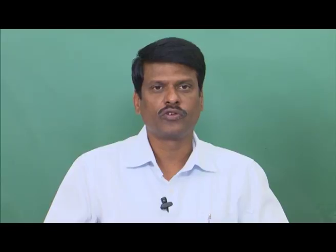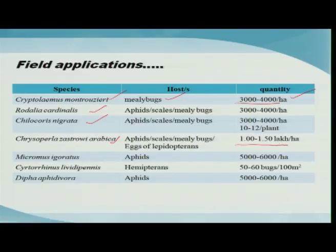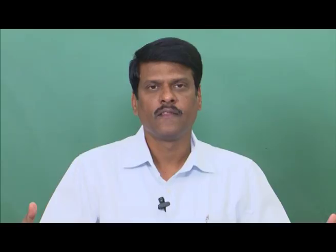How are these predators employed? Doses and target hosts have been standardized. For example, Cryptolaemus montrouzieri against mealybugs is recommended at 3000 to 4000 adults per hectare. Similarly, Rodolia cardinalis and Chilocorus nigrita have been standardized. For Chrysoperla carnea, the green lacewing, about 1 to 1.5 lakh grubs or eggs per hectare is recommended. Dipha effusa, a predator on sugarcane woolly aphid, is standardized at around 5000 to 6000 per hectare. Mass-multiplied and released at the appropriate time, these agents keep pests below the economic injury level and form a very good component in integrated pest management.